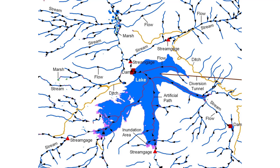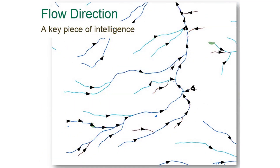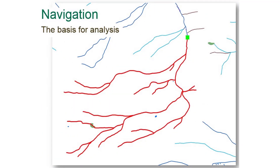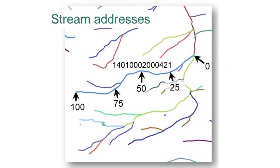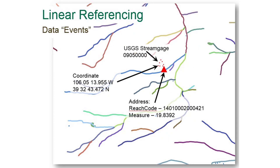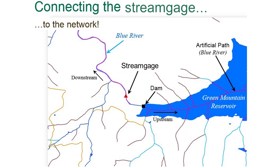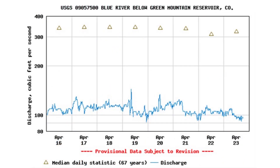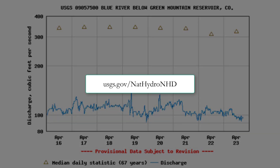Characteristics of the NHD include flow direction, the ability to navigate up and down the network from any point on the network, and a stream address system based on from and to nodes, which supports linear referencing or addressing of data events such as stream gauges, which adds geospatial context to the stream flow data and enables a range of applications. Visit the National Hydrography Dataset page for more information. The URL for this site is usgs.gov/nat-hydro/nhd.